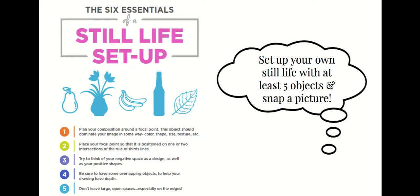First, set up your still life and go over the six essentials of a still life setup. You get to choose what your still life looks like — you need at least five objects — then snap a picture. Plan your composition around a focal point; this object should dominate your image in some way, whether through color, shape, size, texture, etc. You can place it anywhere — top, bottom, wherever you like.